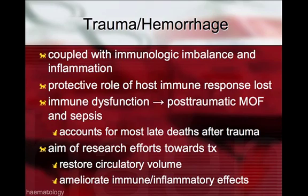With trauma and hemorrhage, we know that it triggers the immune system and increases inflammation through secondary messengers, gene expression, and neutrophil activation. Unfortunately, through this maladaptive response, the protective role of the host immune response is lost. Immune dysfunction can then lead to post-traumatic multiple organ failure and sepsis, which accounts for most of the late deaths after trauma. Knowing this, the aim of research is twofold: to restore circulating volume and to ameliorate the immune and inflammatory effects of trauma and hemorrhage.